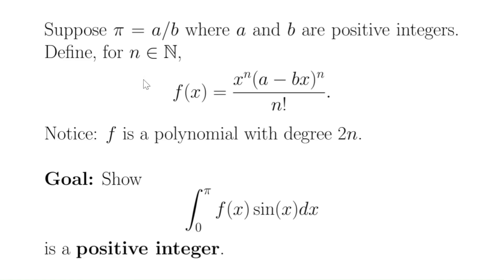For each N, f is a polynomial of degree 2N, and these functions have the same growth and symmetry properties we talked about, because those properties were true for any positive integers a and b. Our goal is to show that this integral is a positive integer for all values of N. First, if it's an integer, it has to be a positive integer, because everything on the interval from 0 to pi — which is really 0 to a over b — is positive: f is positive and sine is positive.